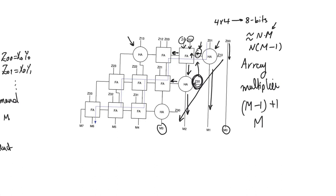Now let's determine the critical path. It starts at z01 or z10 — not z00, which has only interconnect delay — and ends at m6, the sum bit of the last full adder. Note that m6, not m7, is the endpoint, because m7 is a carryout which is typically faster than a sum bit.